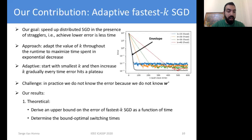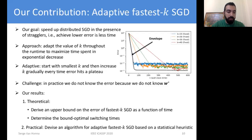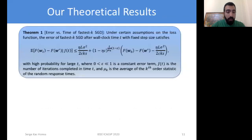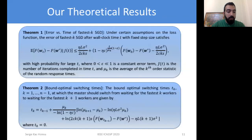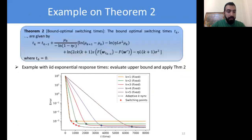Our results are twofold. First, we have theoretical results where we derive an upper bound on the error of fastest-k SGD, and then we derive the bound-optimal switching times — the times at which the master should switch from waiting for k workers to waiting for k+1 workers. Second, we introduce a practical realizable algorithm for adaptive fastest-k SGD based on a statistical heuristic. Using techniques from renewal theory, we upper bound the error as a function of time and then derive the corresponding bound-optimal switching times. The adaptive version of the curve hits the envelope and hence optimizes the error-runtime tradeoff, reaching lower error in less time.